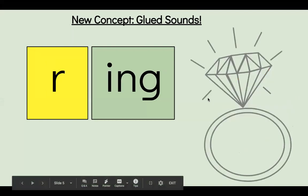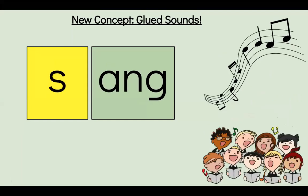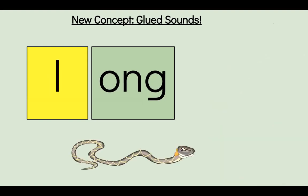Elbows up. Tap it out. R, N, G, the word is ring. Elbows up. Tap it out. L, O, N, G, the word is long. Elbows up. Tap it out. L, O, N, G, the word is long.